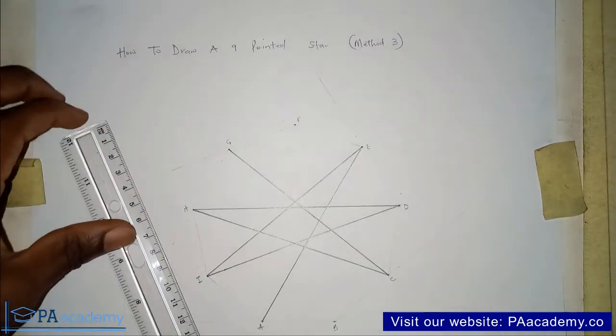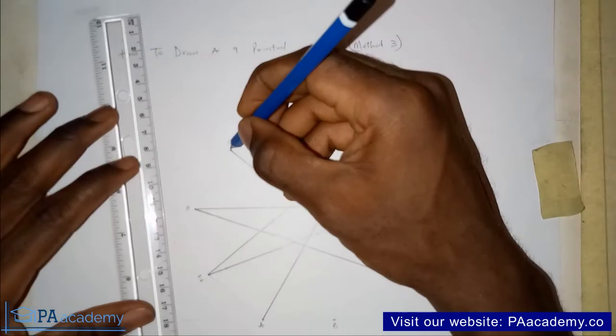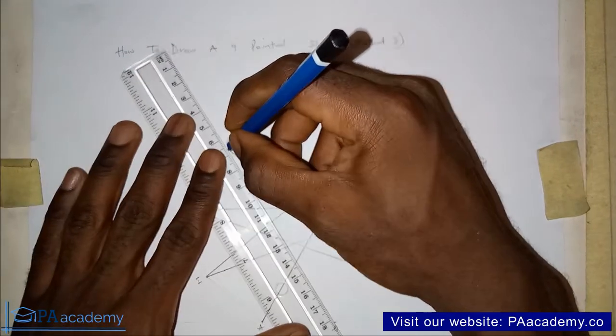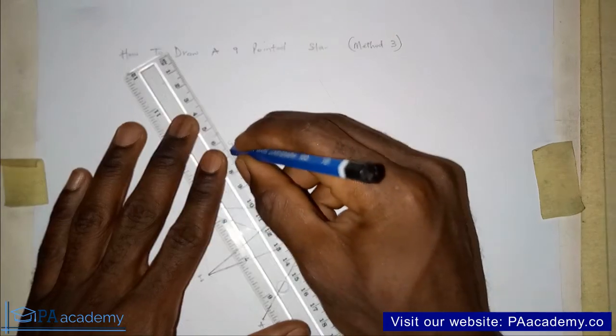If you have your answer, you can note it down. Let's see if you are correct. So from G, the next one we are drawing to is to B. I hope you got that right.